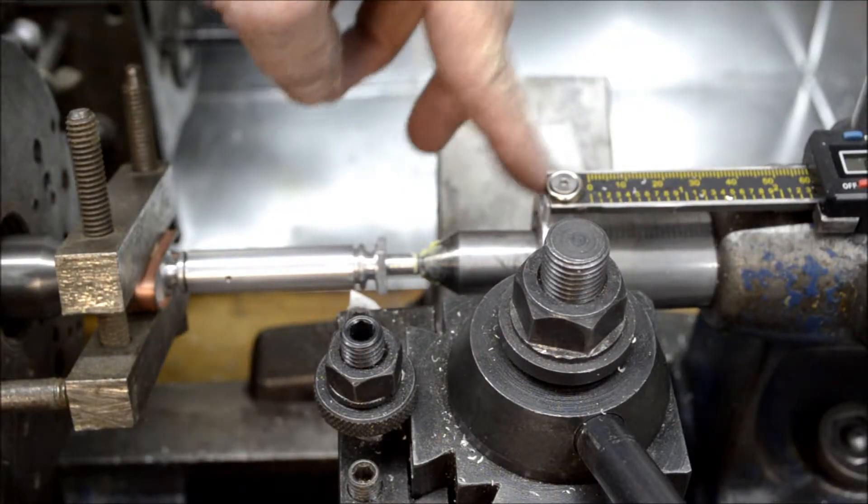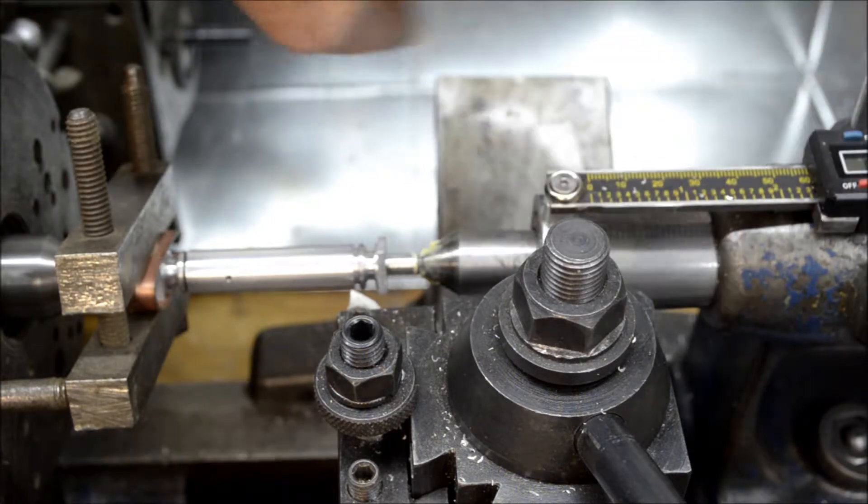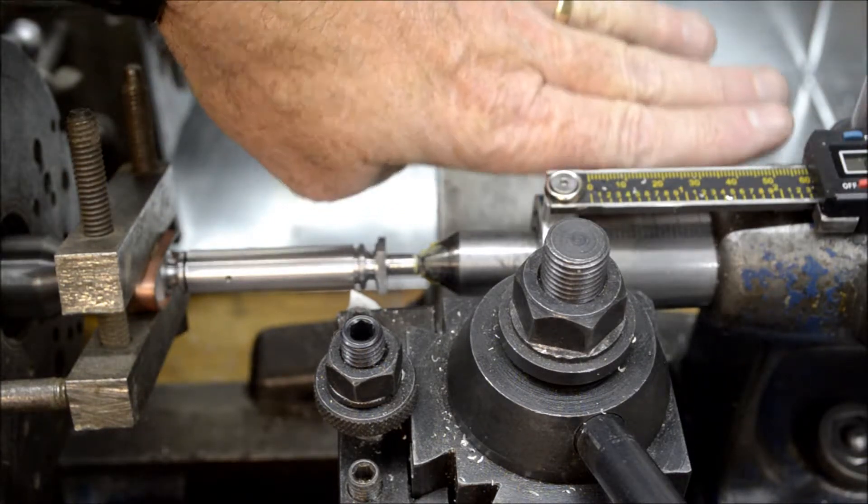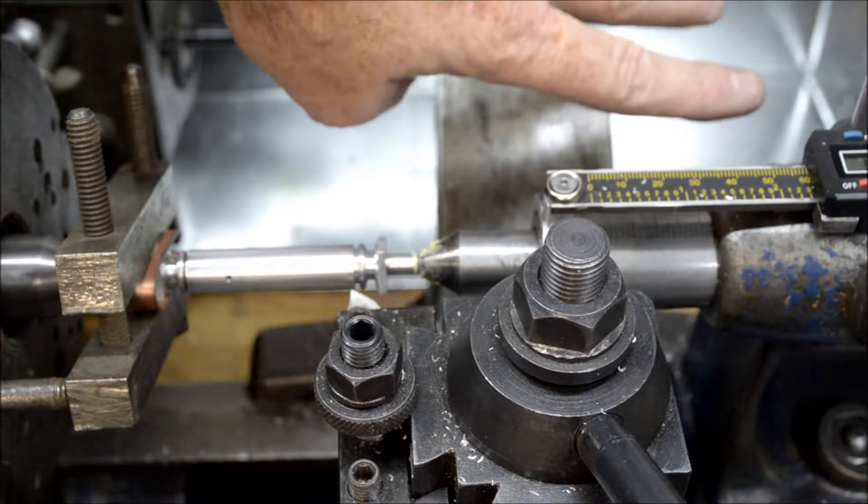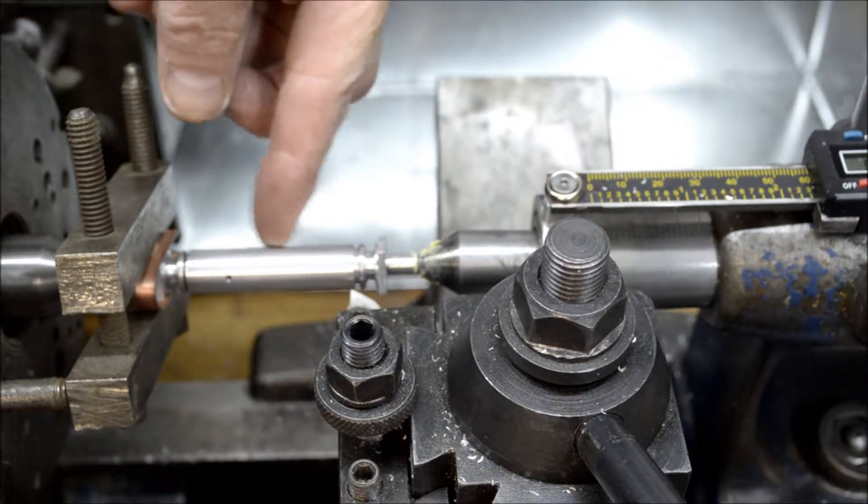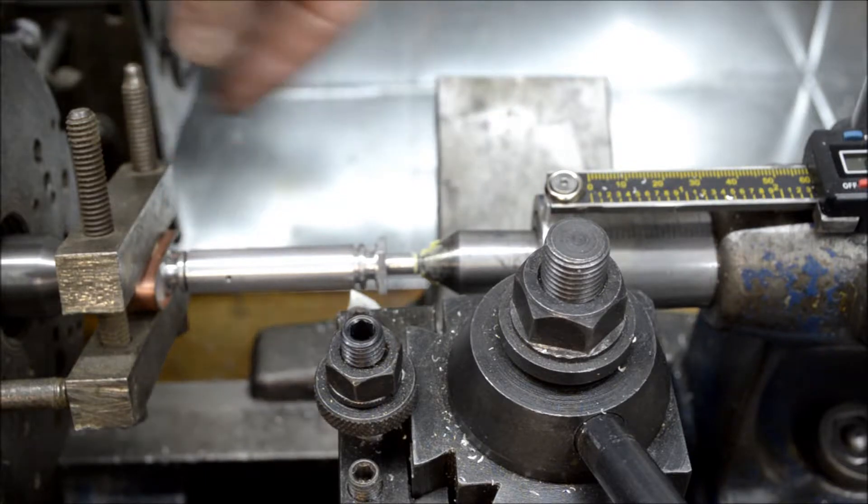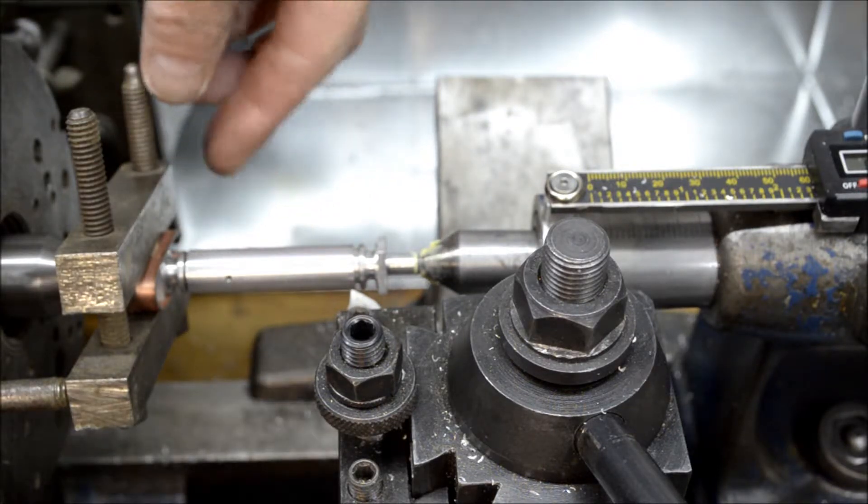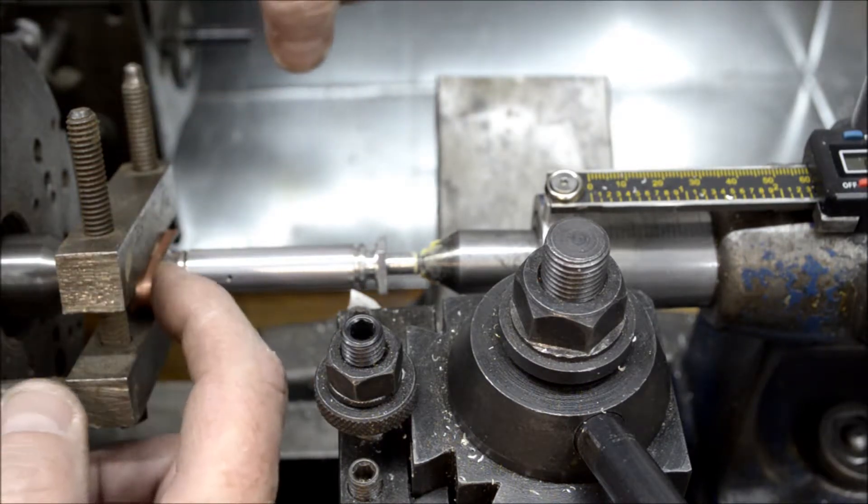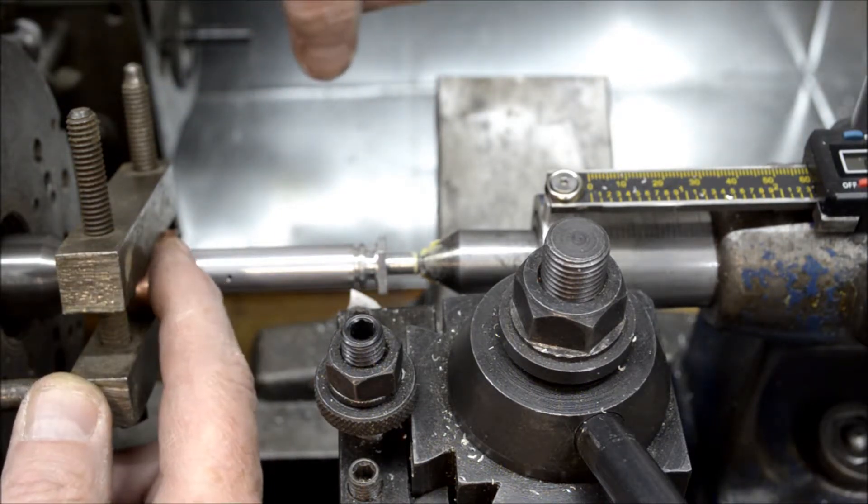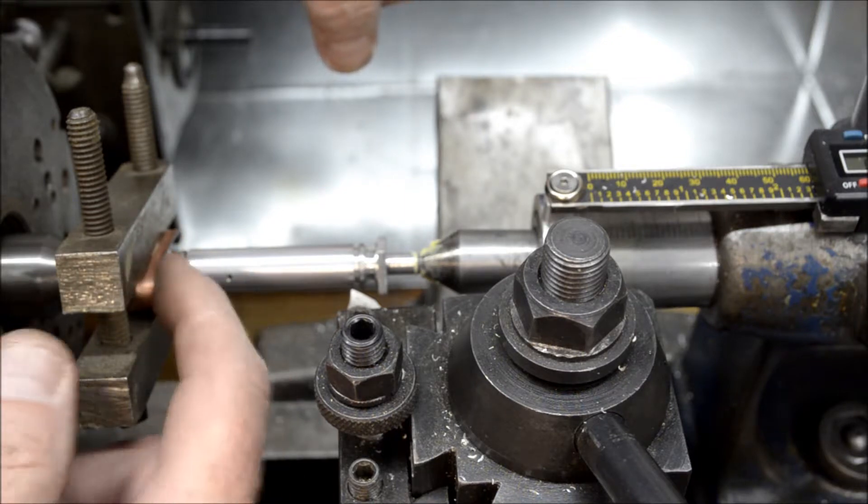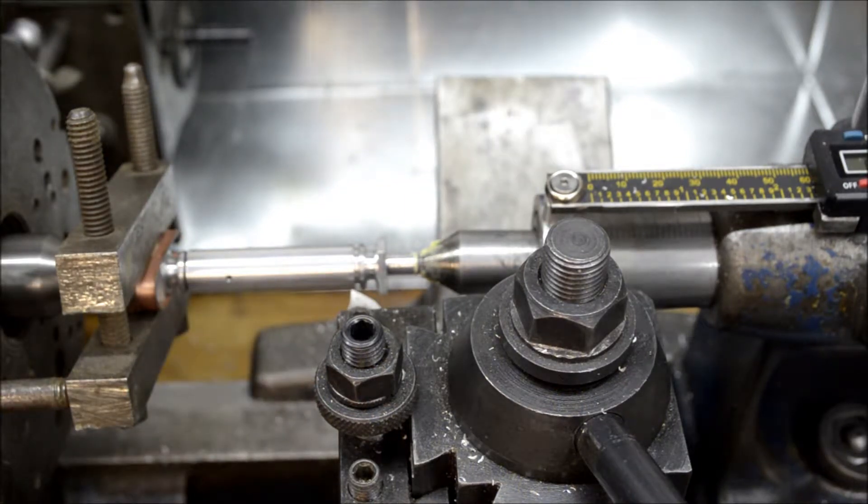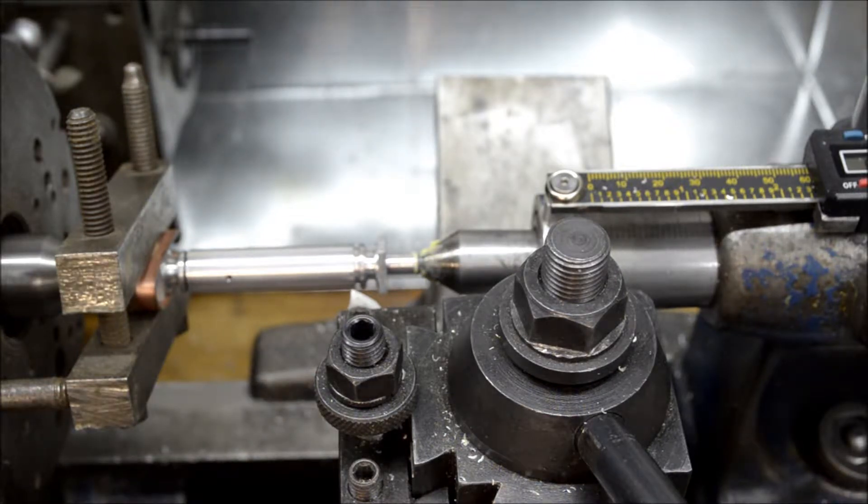Okay. I used my dial indicator to indicate moving this tail stock back forty-seven thousandths of an inch, which should be giving me the taper that I need here. As you can see I got the column turning between centers. I put a dog and I got a piece of copper just protecting the aluminum here. So let's get this going here. See what happens.